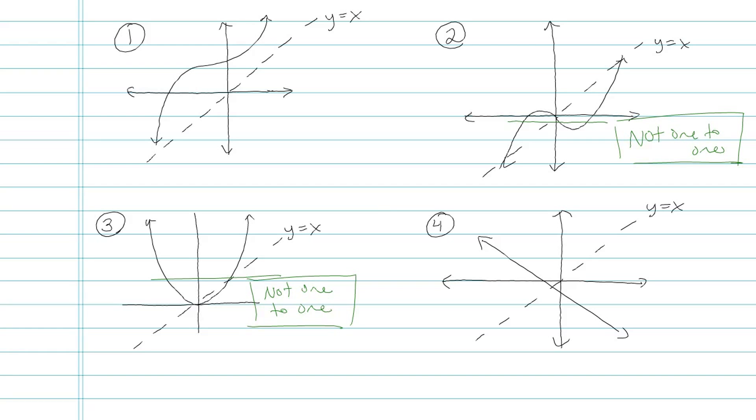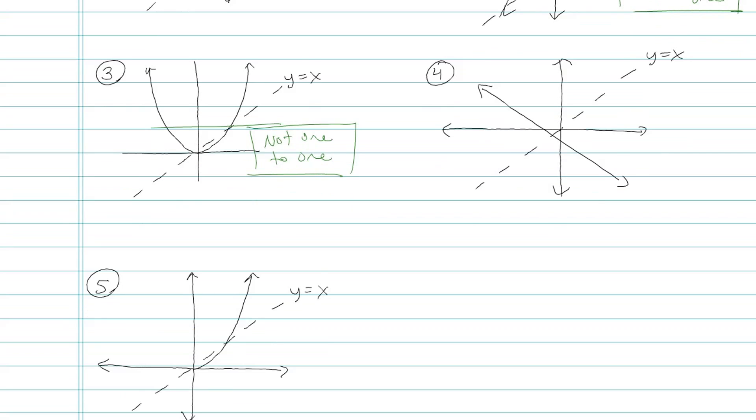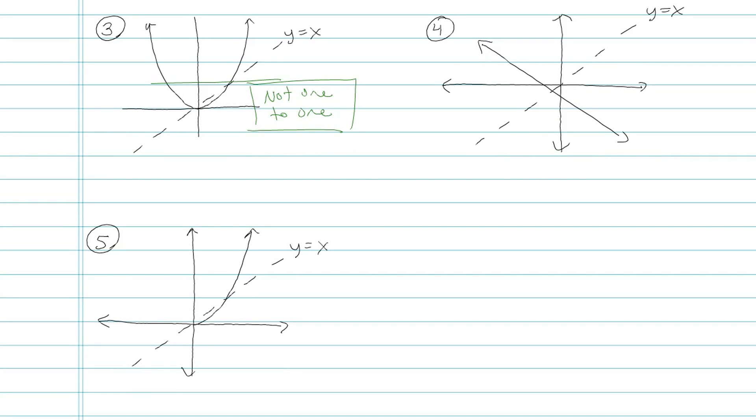Number 4. Yeah, that one passes the horizontal line test, so we'll come back to that. And number 5. Now look at the difference between 3 and 5. It still kind of looks like a parabola, only it's half of a parabola.